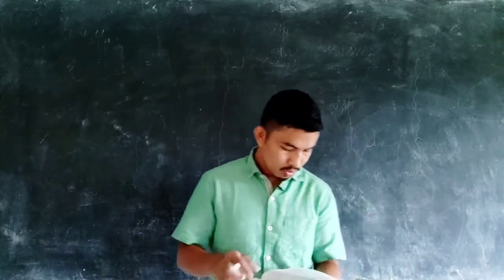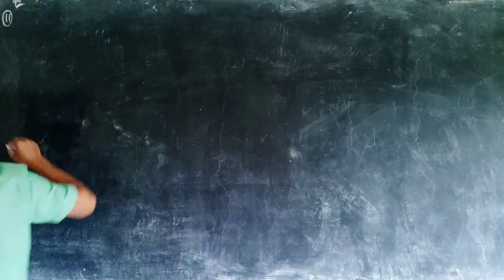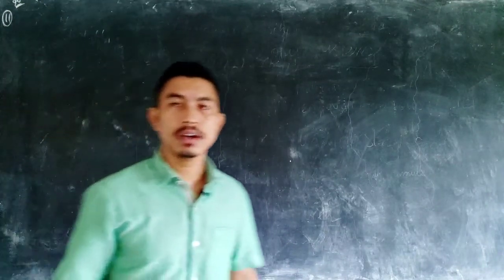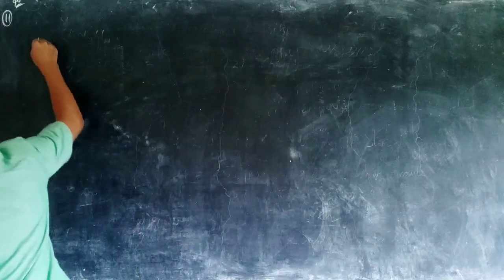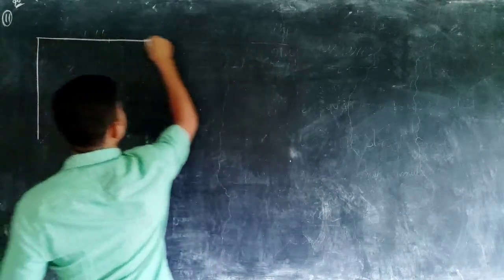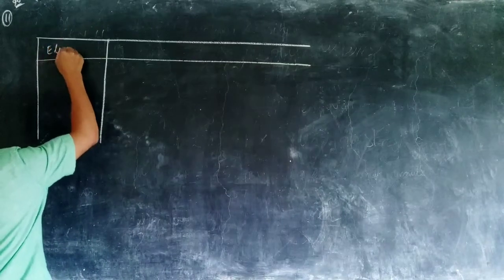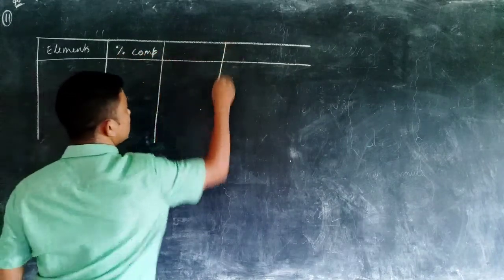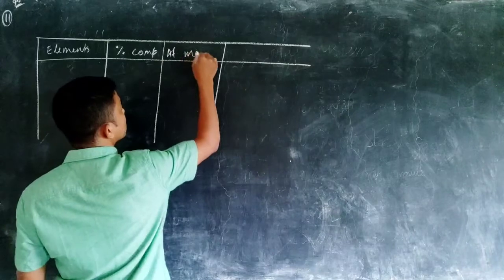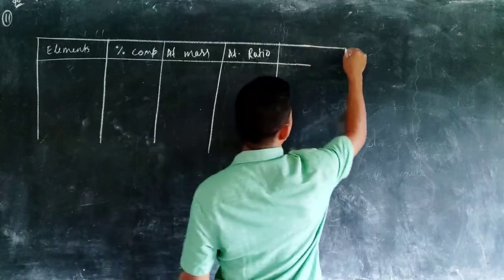Now we will look at the empirical formula and the molecular formula. You must learn how to make a table to find the empirical formula. You will make rows and columns. The first column contains the name of the element. The second column contains the percentage composition. The third column contains the atomic mass. The fourth column contains the atomic ratio, and the final column contains the simplest ratio.